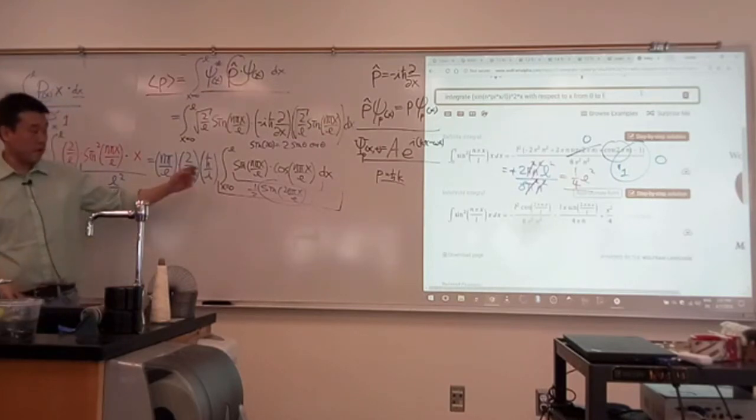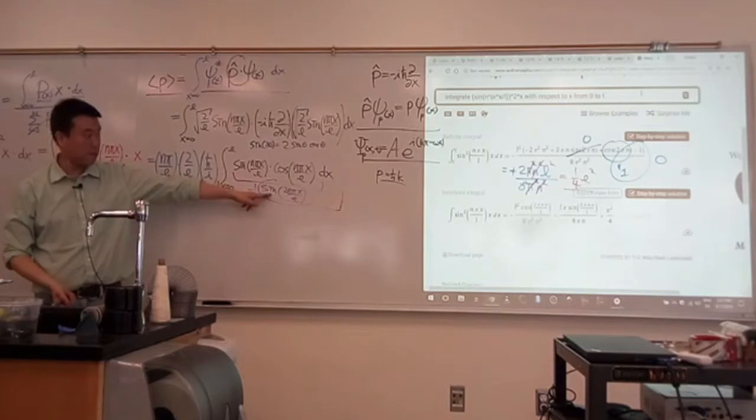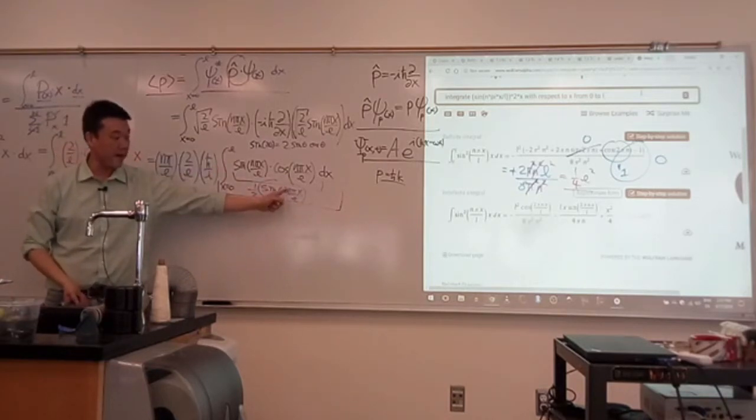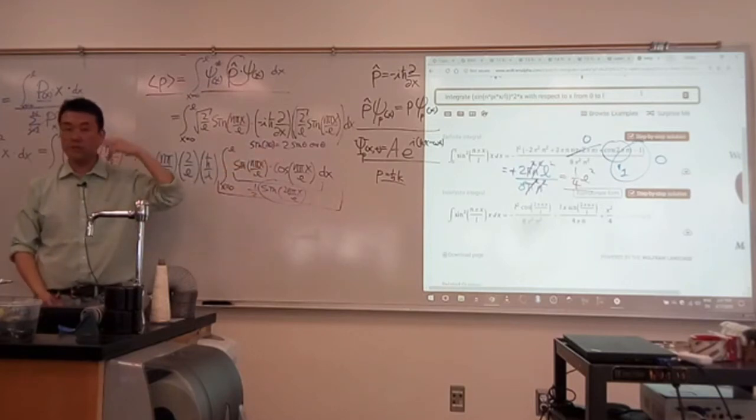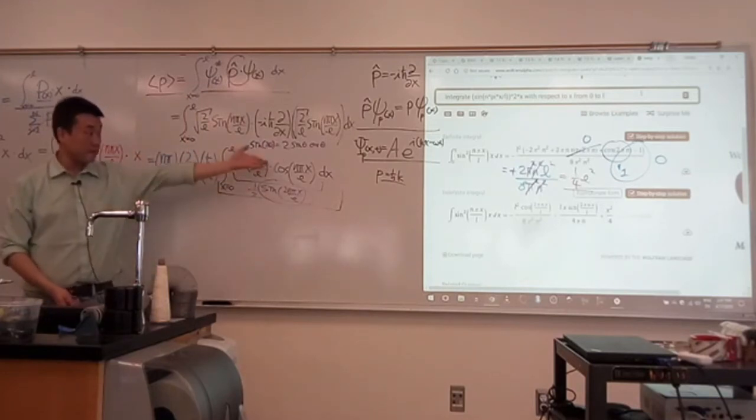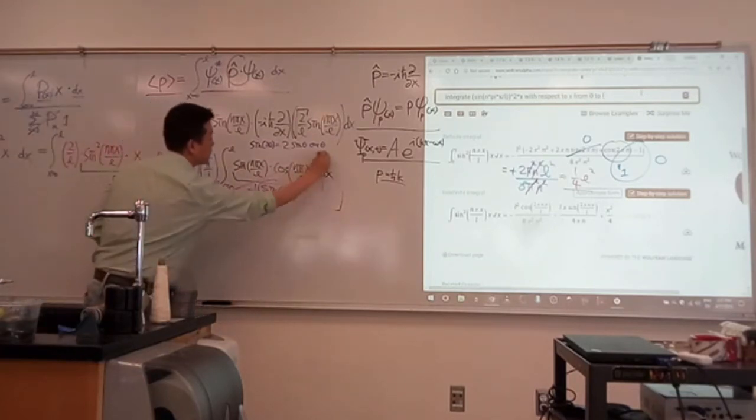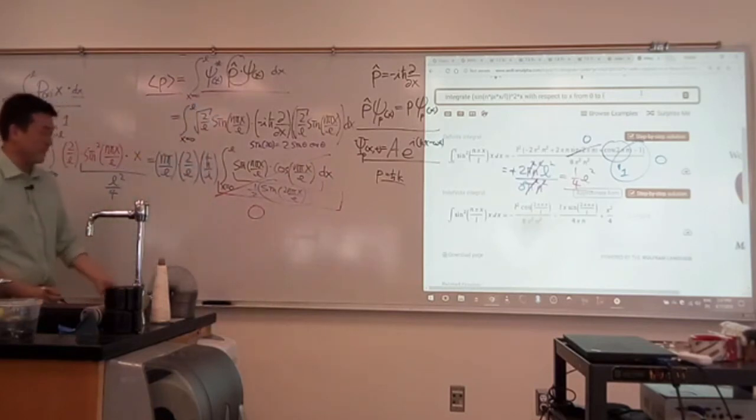It's integration of a sine function from x equals 0 to L. Plug in L, it's 2 pi n, or the integer multiple of a cycle. So this entire integral, when you look through those expressions, ends up being zero, meaning all these factors don't matter, it's zero.